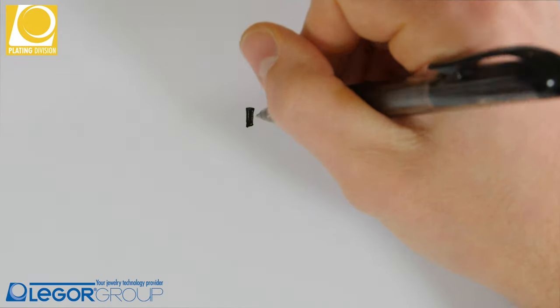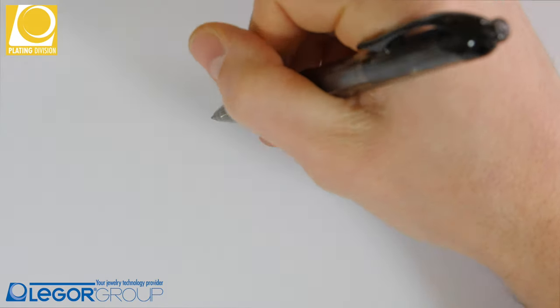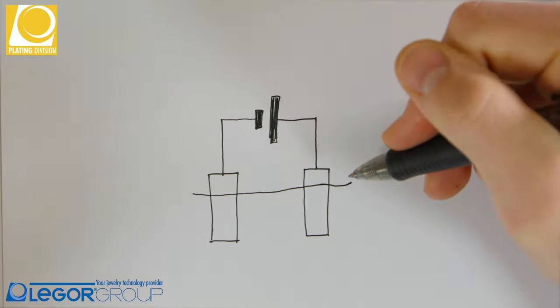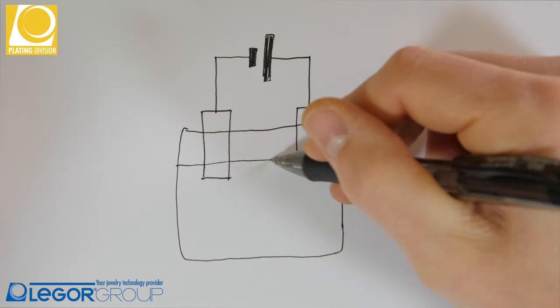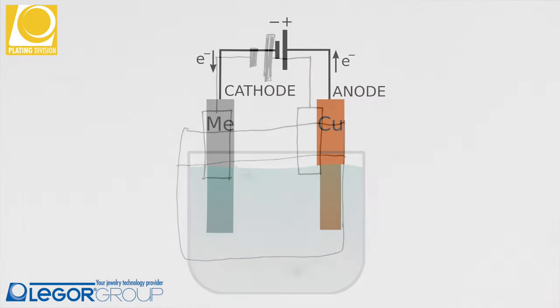In the first system we have two objects: a cathode, which is the object we want to plate, and an anode, which is the element that will be deposited on the surface of the cathode.